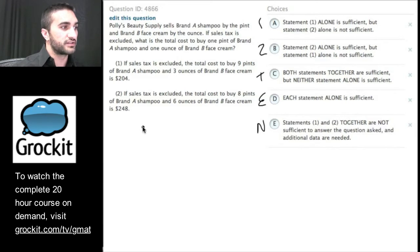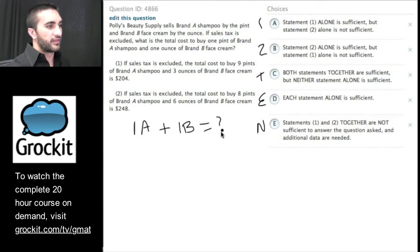Great so the question tells me some information, it's a word problem. I'm going to break it down into parts, I'm going to re-represent the question in a way that I can work with it. So if sales tax is excluded, they're just saying don't worry about adding tax, just crunch the numbers, what is the total cost to buy one pint of brand A shampoo, so we want one A, and one ounce of brand B face cream. They want to know how much this is going to cost us.